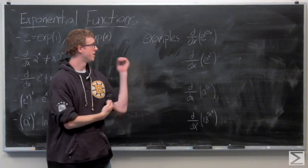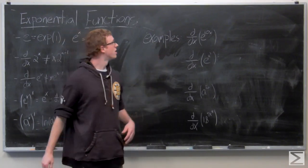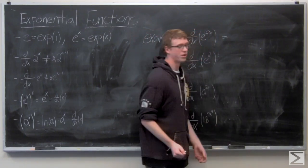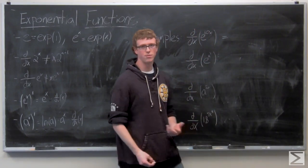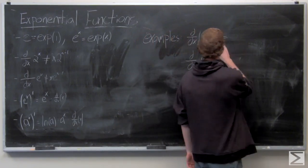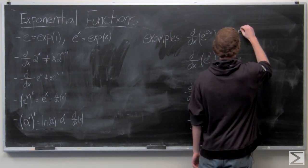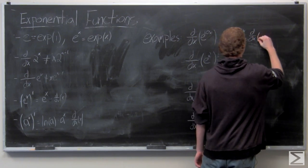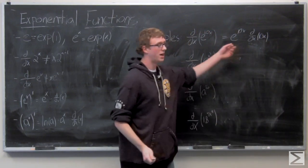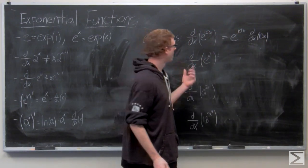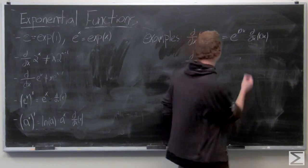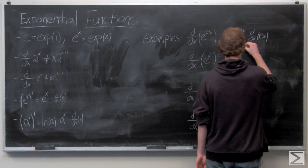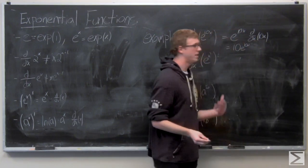Now we're going to take a look at a couple of examples. We want the derivative of e to the 10x. The derivative of e to the x is just e to the x, but we have 10x in the exponent here, so it's e to the 10x times d/dx of 10x, which is just 10. So the total derivative is 10e to the 10x.